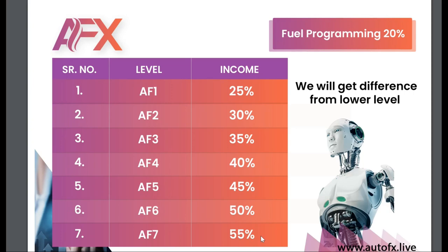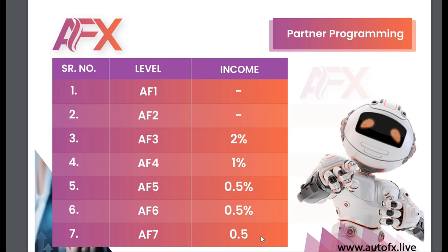The next income stream is partner programming income, and I love this one a lot. In many network marketing businesses, the company only shares profit with people on the highest rank. But that's not how AFX works — AFX wants to reward and encourage you. They share partner programming income — a share of their own profit — from rank three all the way to rank seven. At rank three you get 2%, rank four 3%, rank five 3.5%, rank six 4%, and rank seven 4.5%.